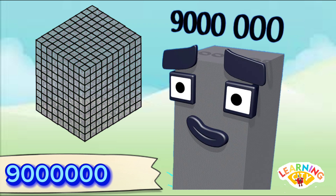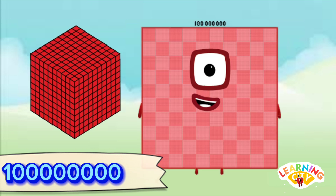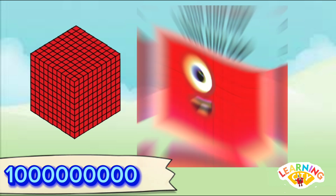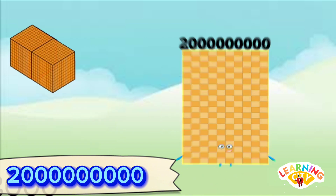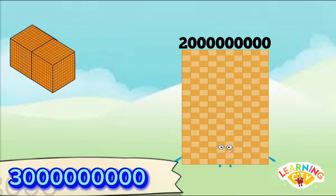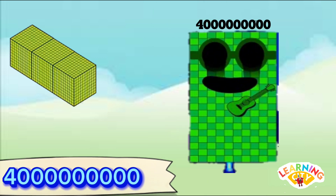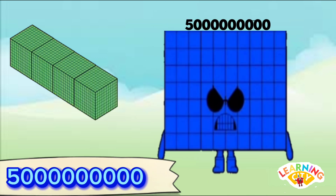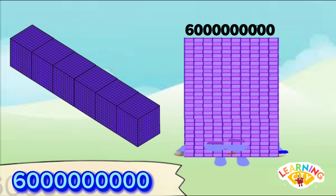9,000,000, 10,000,000, 100,000,000. 1,000,000,000. 2,000,000,000, 3,000,000,000, 4,000,000,000, 5,000,000,000, 6 billion.